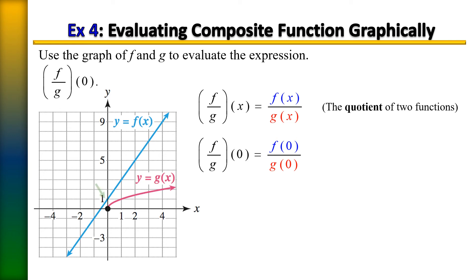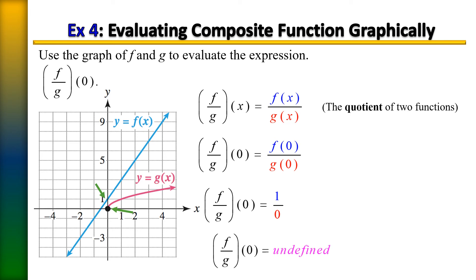On the bottom of the fraction we have zero as our output. You should know that any time you have a fraction with a zero in the denominator, the answer is always undefined. So the expression f over g of zero is undefined.